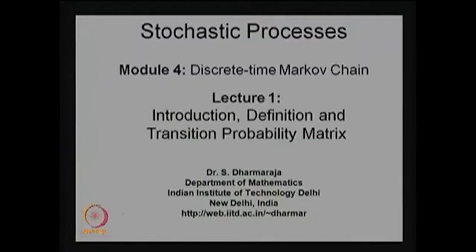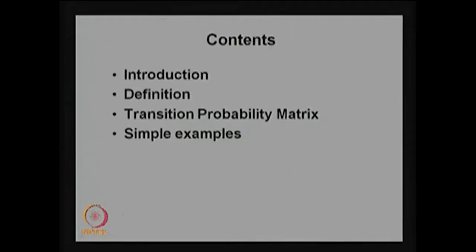In this stochastic process module, we are going to discuss the model for discrete time Markov chain, and this is lecture one. In this lecture, I am going to discuss the introduction about the discrete time Markov chain, followed by the definition and the important concept called the one-step transition probability matrix, and a few simple examples.